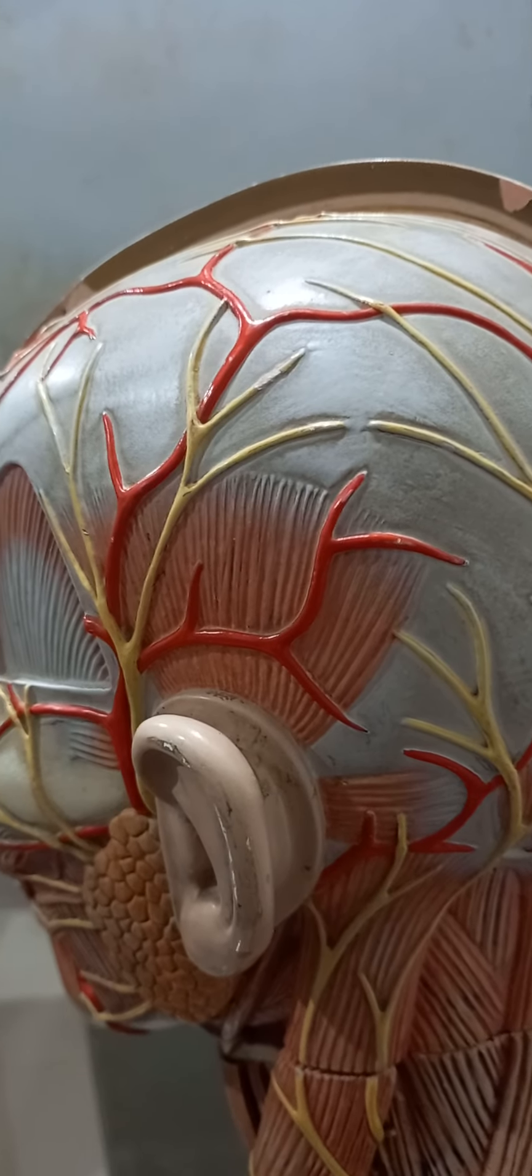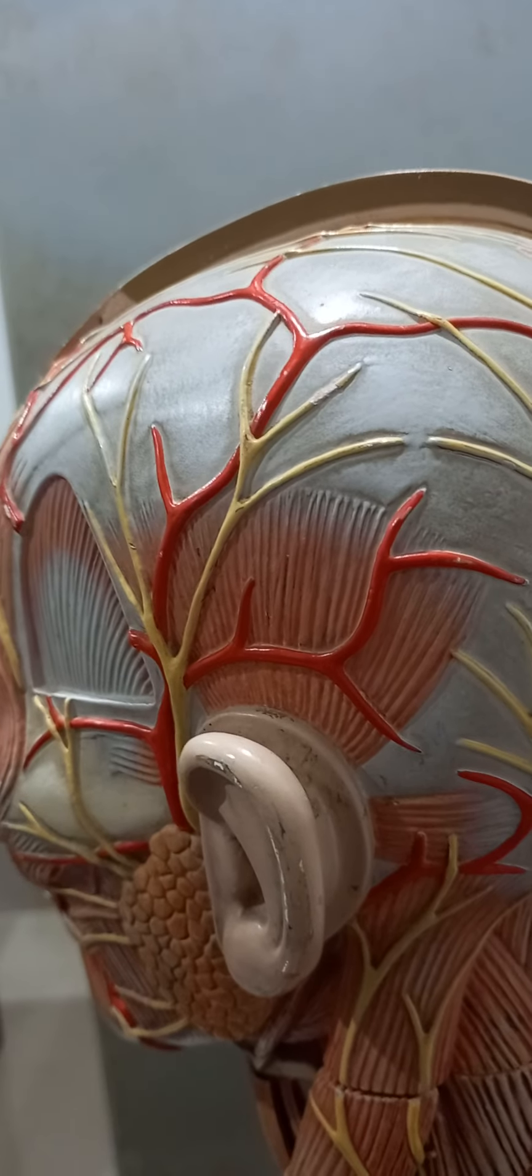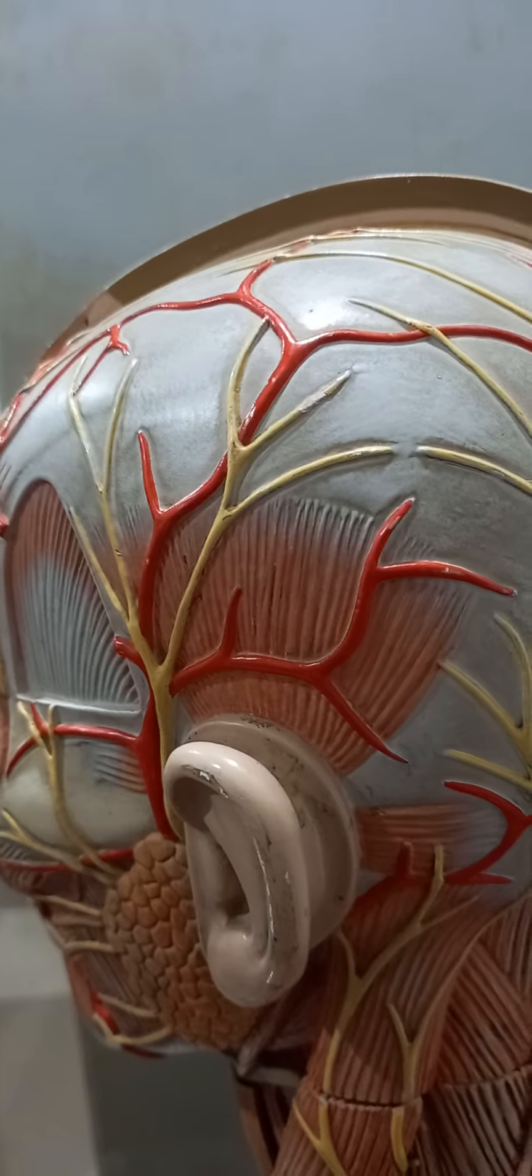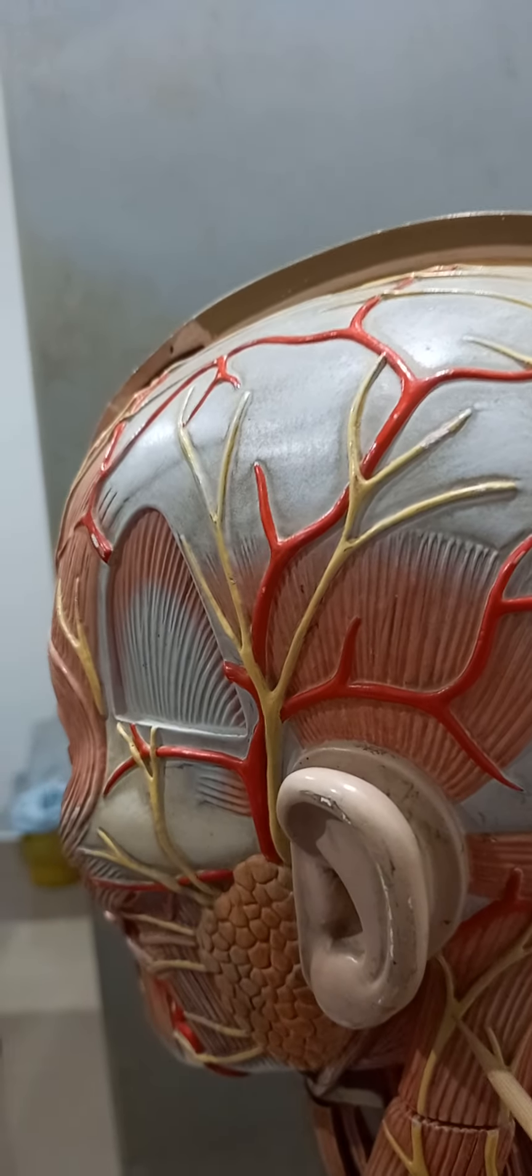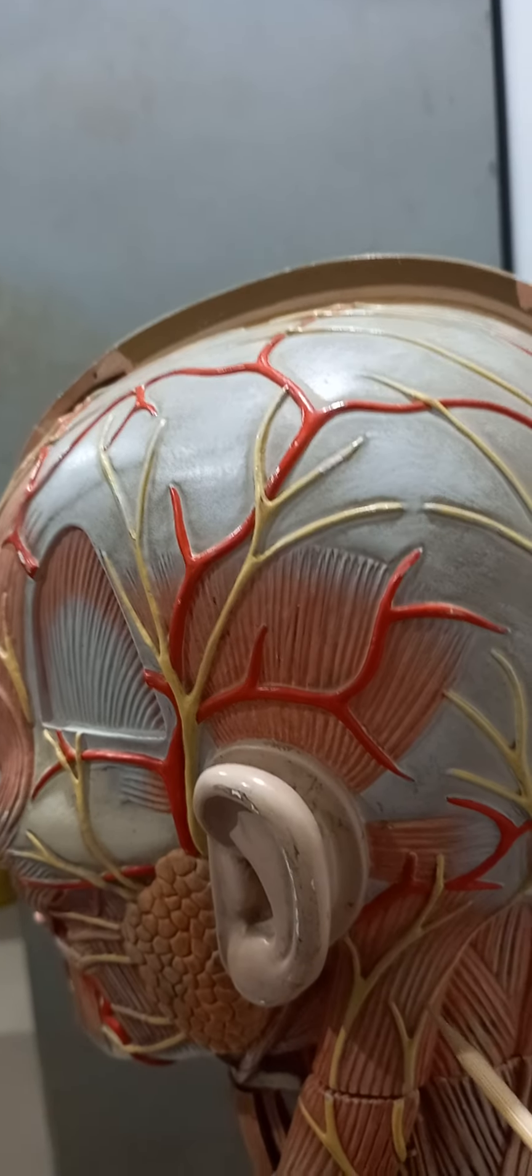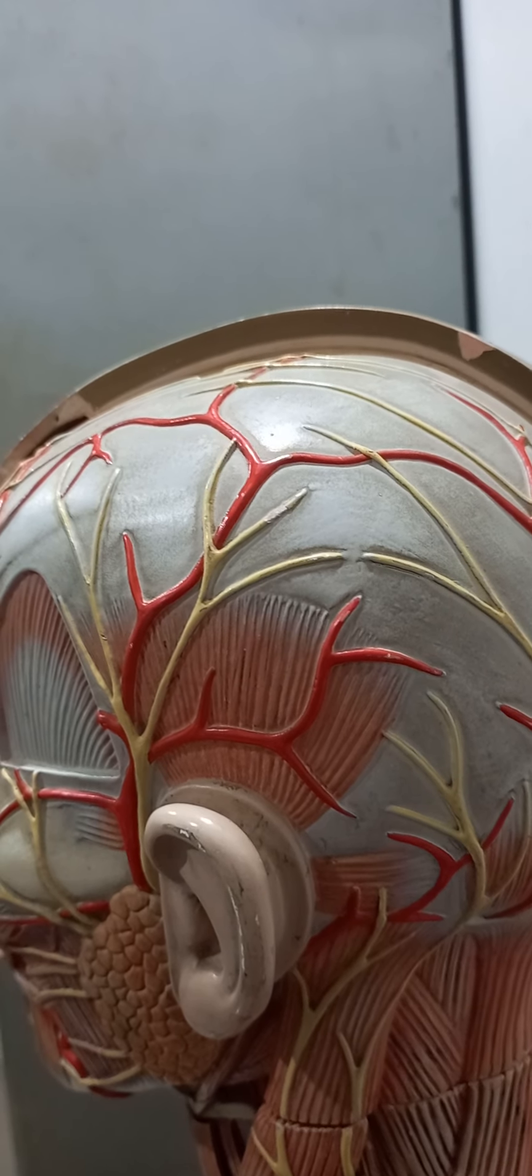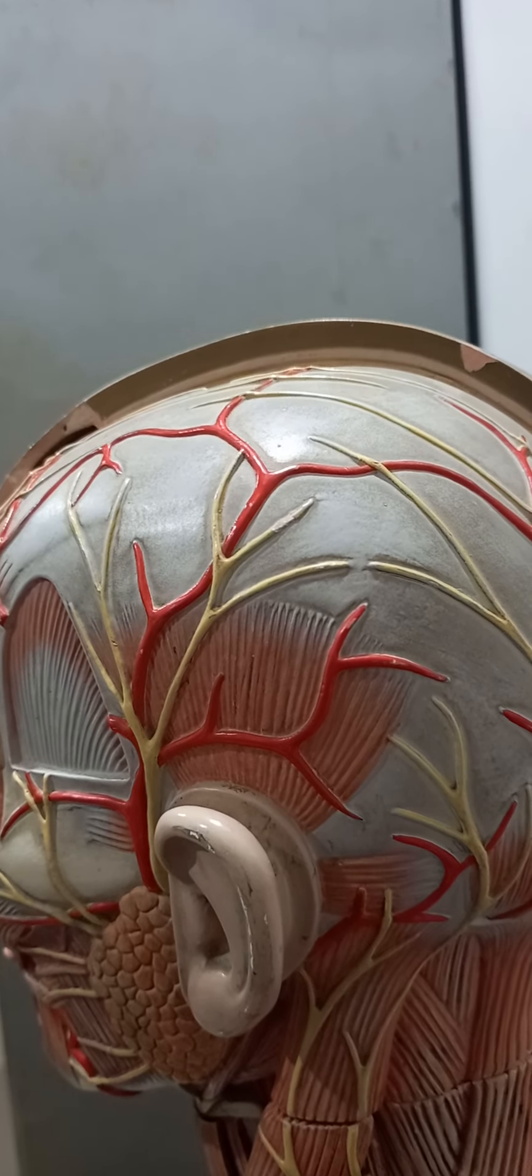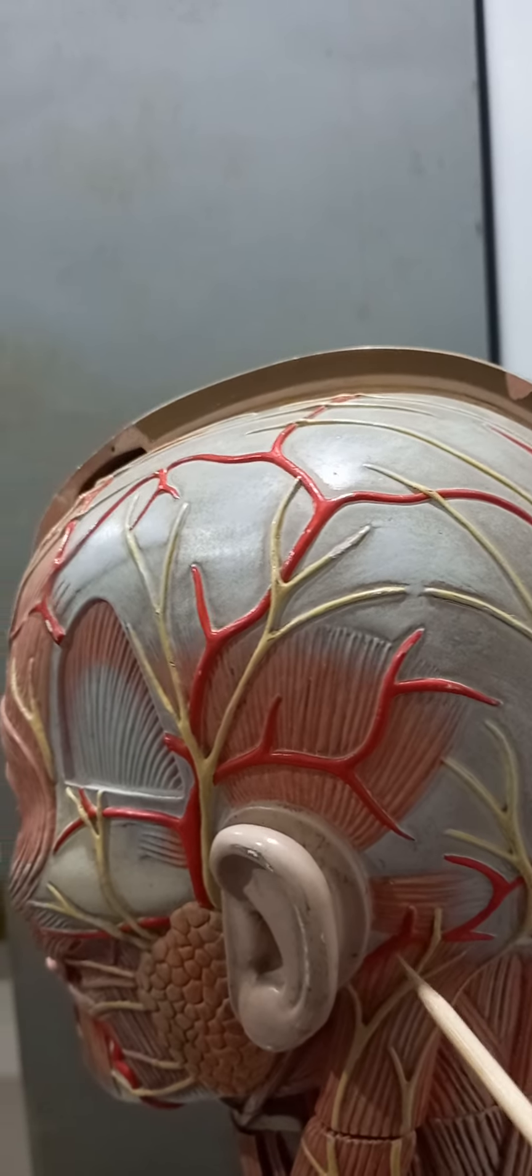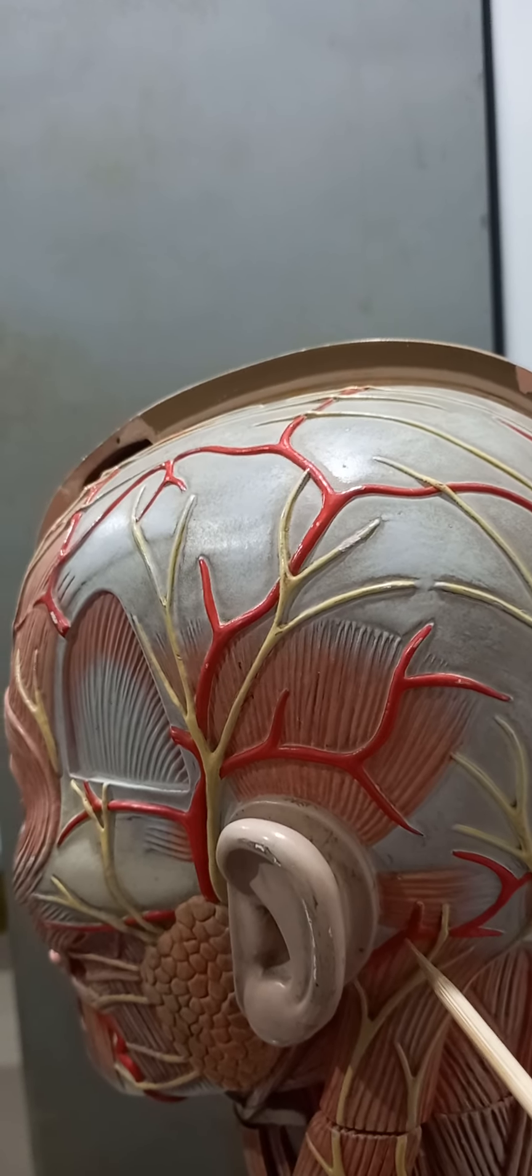Then posteriorly see that this is the occipital belly of occipitofrontalis. The nerves are the great auricular nerve, lesser occipital nerve, and greater occipital nerve. And here you can see this is occipital artery and posterior auricular artery.